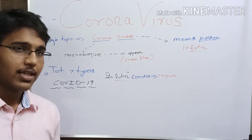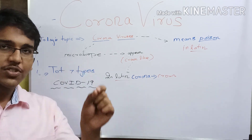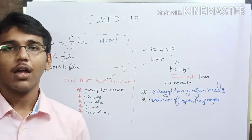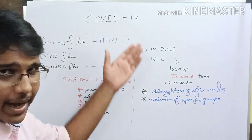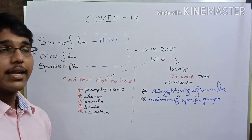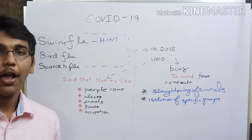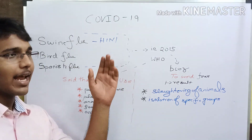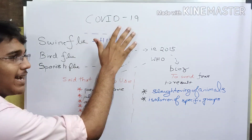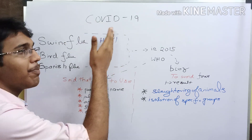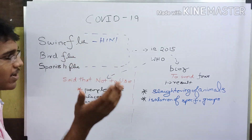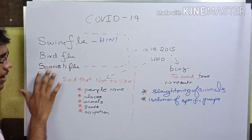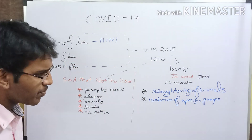Totally, there are seven types of coronaviruses. One of such viruses causes the disease COVID-19. Now let us talk about COVID-19 and the reason behind its name. A question may baffle your minds: why is the name COVID-19 different from prior disease names? For example, swine flu H1N1, bird flu, and Spanish flu.